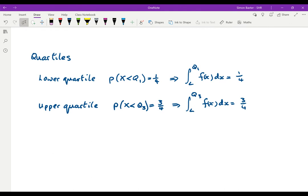Finding the quartiles is very similar. The median breaks up your distribution into two equal areas. The quartiles will break it up into four. So the lower quartile, the probability that x is less than the lower quartile, must be a quarter.